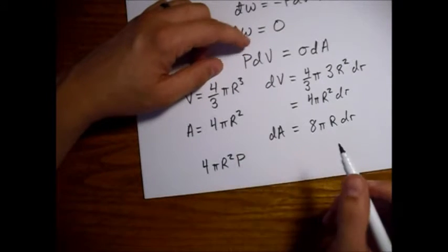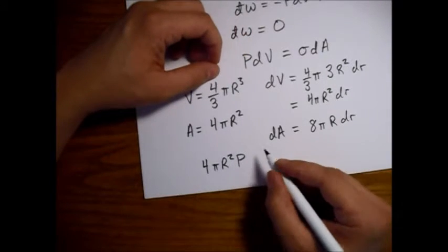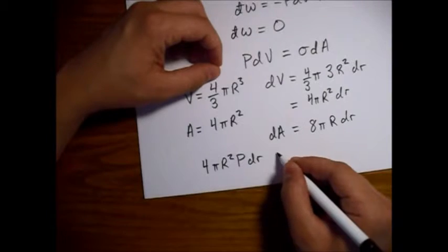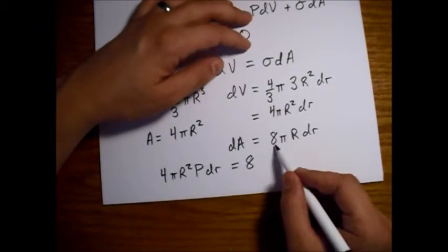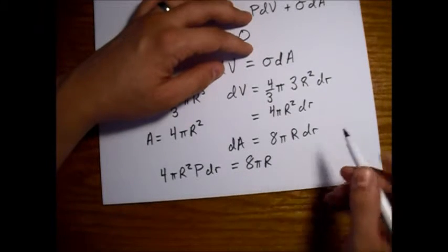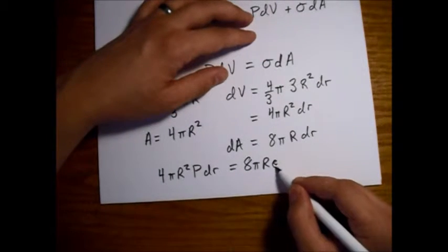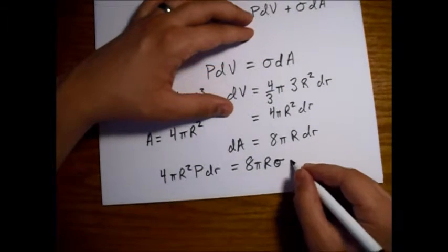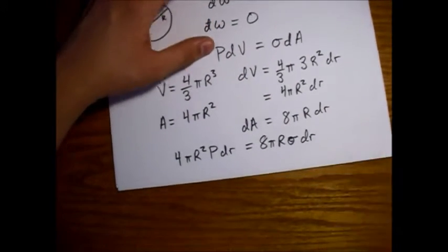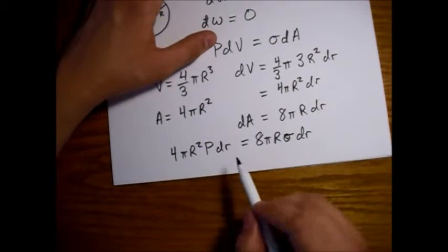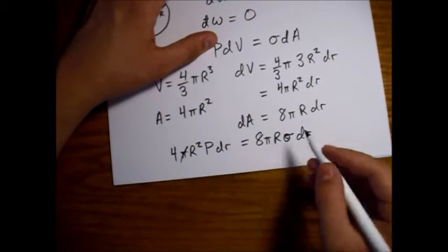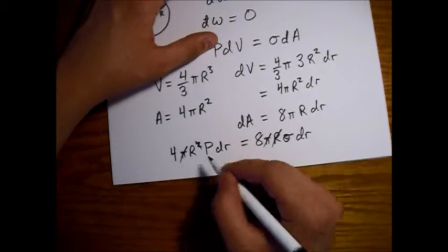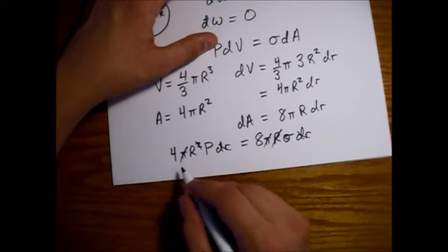So plugging in for dV we have four pi r squared, then we'll have this p from up here and a dr and then over here we have the sigma, so we'll have this eight pi r, we'll have our sigma dr. So this tells us if we go through and take out our various pieces.